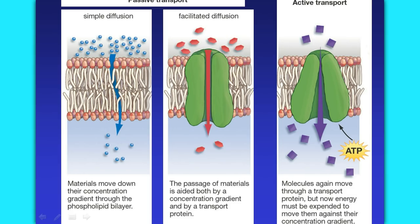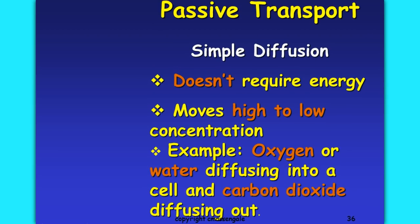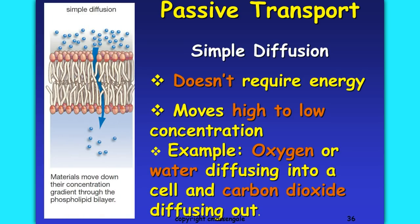So let's learn about these different types of transport. First, passive transport — the first example is simple diffusion, which we've already been looking at. It doesn't require any energy. It moves molecules from high to low concentration. Examples include oxygen moving across the membrane, water diffusing into the cell, and carbon dioxide diffusing out.